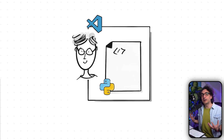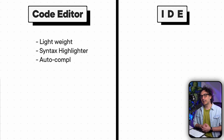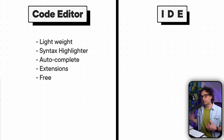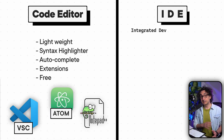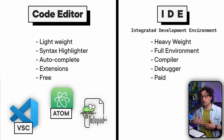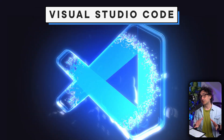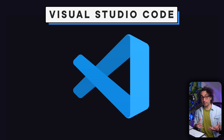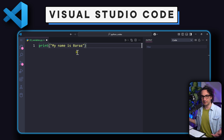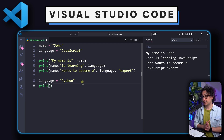Now the question is where we're going to write our Python code. We have two options: a code editor or an IDE. A code editor is like a smart notepad for developers — you get syntax highlighting, autocomplete, file navigation, and many extensions. Famous editors include Visual Studio Code and Atom. An IDE (Integrated Development Environment) is heavier and more advanced — you get a debugger, compiler, version control, and more. Famous ones include PyCharm and Visual Studio (not Visual Studio Code). We're going with Visual Studio Code — it's free, lightweight, has everything we need, and is used by professionals too.